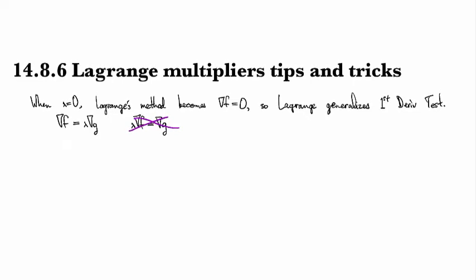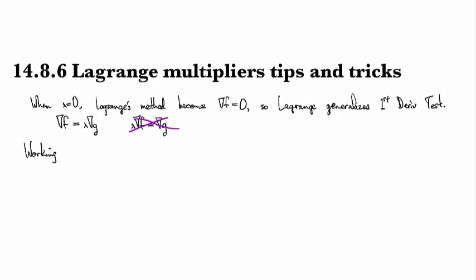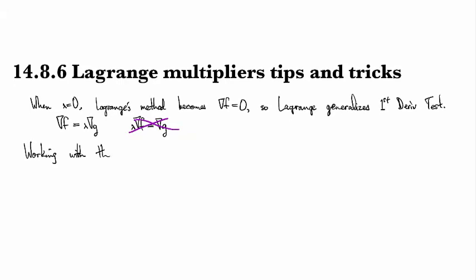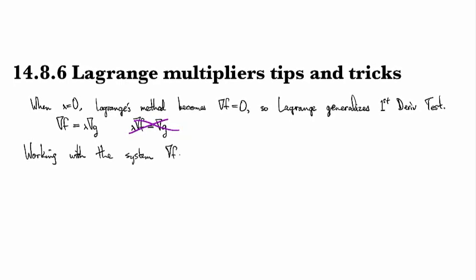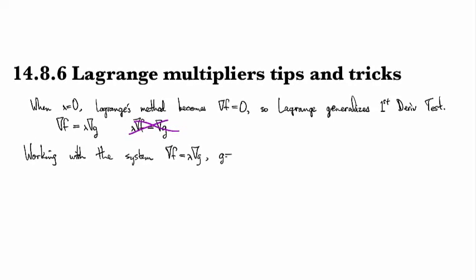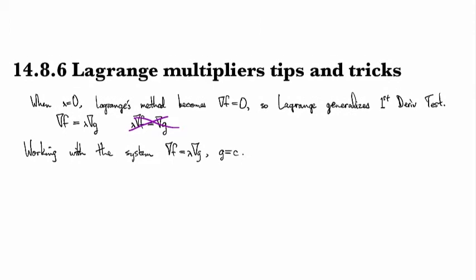It's a little bit messier than that. So let's talk about working with the system, grad f equals lambda grad g, g fixed equal to c.